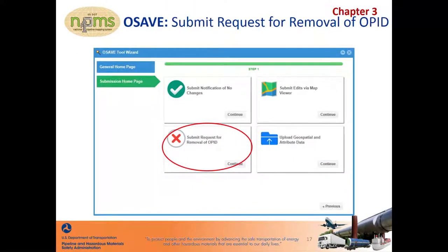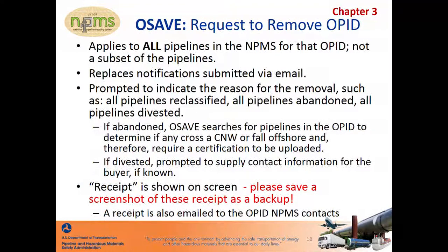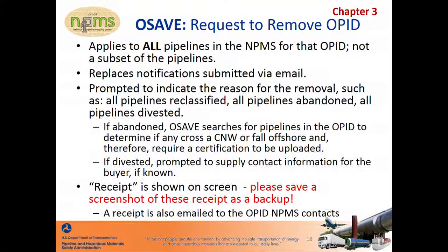Next, we're going to talk about submitting a request for removal of the OPID. In the situation where all pipelines in the NPMS should be removed, you'll submit a request to remove the OPID. Please note that this is a request to remove all pipelines in the NPMS for that OPID — not a subset of the pipelines. This notification through OSAVE replaces the need to email the request to NPMS staff. Through the workflow, you'll be prompted to indicate why the pipelines need to be removed. Possible reasons include that they're reclassified, abandoned, divested to another OPID, or were originally submitted in error.